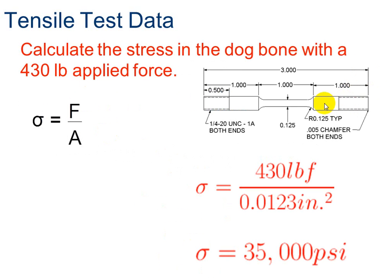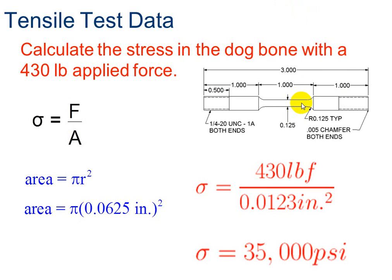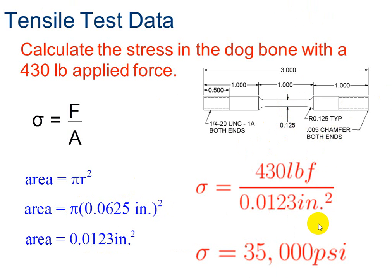Remember your sample is cylindrical, so if you cut it in half and look at it, it would be a circle. The area is pi r squared. So take the diameter, divide by 2 to get the radius, square it, and multiply by pi. For example, if the area is 0.0123 inches squared and we apply 430 pounds of force and divide, we get approximately 35,000 pounds per square inch — that's psi, or stress.